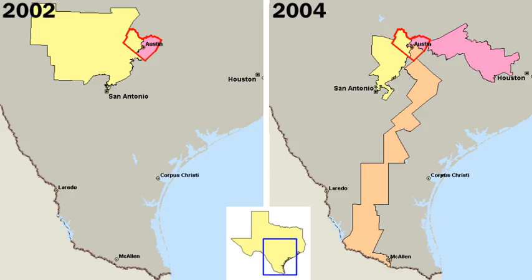The commission form combines both the legislative and executive functions in one group of officials, usually three or more in number, elected citywide. Each commissioner supervises the work of one or more city departments. Commissioners also set policies and rules by which the city is operated. One is named chairperson of the body and is often called the mayor, although his or her power is equivalent to that of the other commissioners.